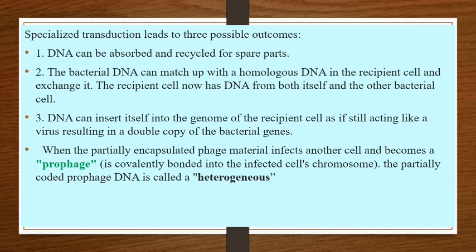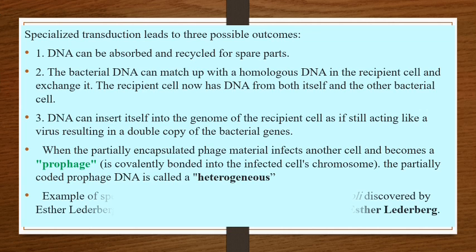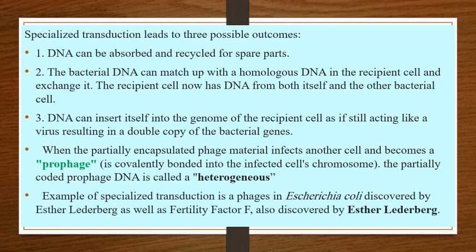When the partially encapsulated phage material infects another cell and becomes a prophage, the partially coded prophage DNA is called heterogenote. An example of specialized transduction is lambda phage in Escherichia coli, discovered by Esther Lederberg, as well as the fertility factor F, also discovered by Esther Lederberg.